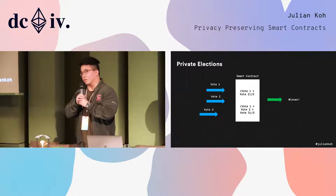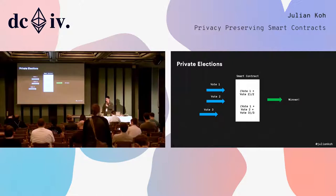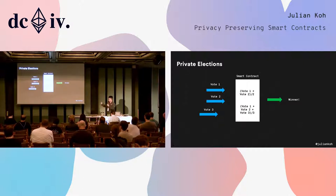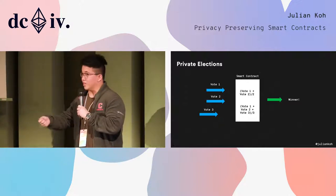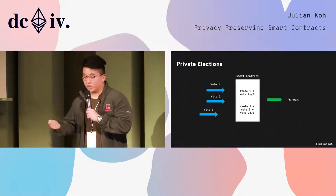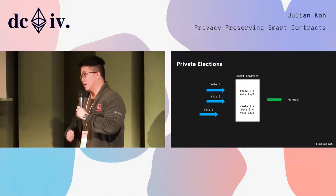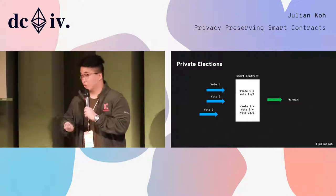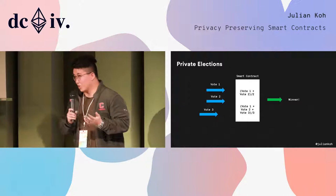The easiest example to understand why this is useful is a private election smart contract. We all want to vote, and the smart contract counts everyone's votes and gives a winner. But as you can see, let's say vote 1 and 2 come in at the same time, and vote 3 comes in 10 minutes later. The third voter can actually see what the other people voted first, and decide — it's 50-50 right now, so now if I vote I can push the result whichever way I want, which is really bad.